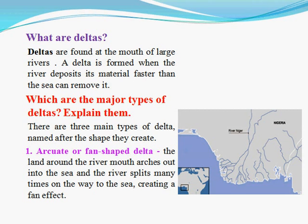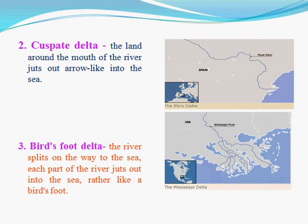There are three main types of delta, named after the shape they create. First, the Arcuate or fan-shaped delta, where the land around the river mouth arches out into the sea and the river splits many times on the way to the sea, creating a fan effect. Second, the Cuspate delta, where the land around the mouth of the river juts out arrow-like into the sea. Third, the Bird's foot delta, where the river splits on the way to the sea and each part juts out into the sea, rather like a bird's foot.